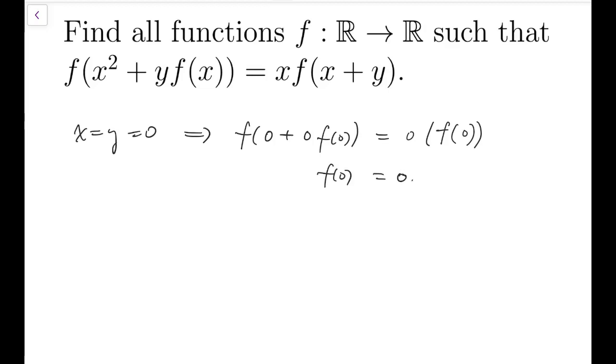So now we can freely put in any zeros we want and see what we'll have. The next step I will do is to put y equals zero. Then f of x squared, the y times f of x will vanish. So f of x squared equals x times f of x.